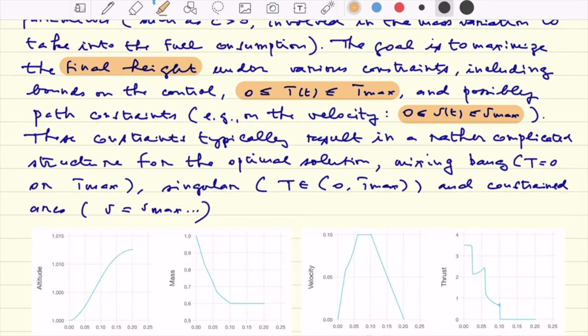In the case of a direct solver, the very nice thing is that we will not assume anything and the solver will approximately try to guess what the structure of the control is. We might have some bound arcs where T max is reached by the control T or 0. This will be called the bound arcs. We might have some singular arcs where the control T lies within the interior of the constraint 0 T max and we might have also some constraint arc where, for instance, the bound on the velocity, if there is one, is saturated.